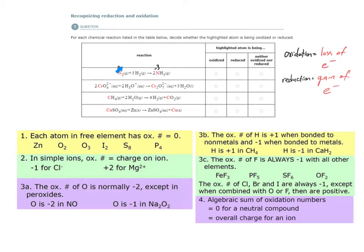If the oxidation number of this nitrogen atom became more negative, that gives me a hint that this nitrogen atom was probably reduced. Oxidation number helps us to keep track of electrons. So if the oxidation number drops and becomes more negative, that's because the nitrogen atom gained negative electrons in this reaction.